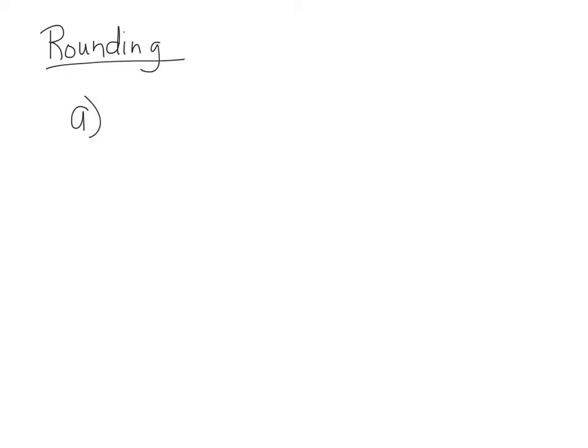We've all rounded numbers before. For example, 2.778 — we want to round to the nearest tenths, which is the first decimal place. When you round a number, you look to the digit after that place. We look at the hundredths place: if that number is greater than 5, we round the previous number up. The 7 is greater than 5, so we round up to 2.8.